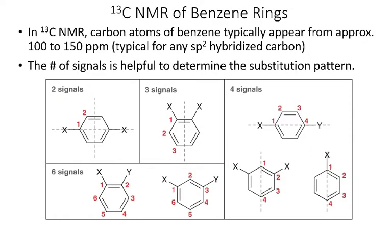Finally, for carbon-13 NMR, the carbons of the benzene ring typically appear between 100 and 150 ppm, which is typical for any sp2 hybridized carbon. The number of signals in that region can indicate the substitution pattern of the ring. You don't need to memorize the specific values, but you should be able to determine how many signals a given structure would produce. This is especially useful for distinguishing ortho from meta substitution that proton NMR alone might not resolve.